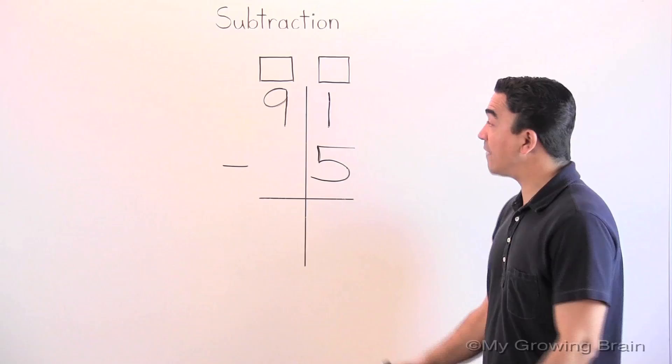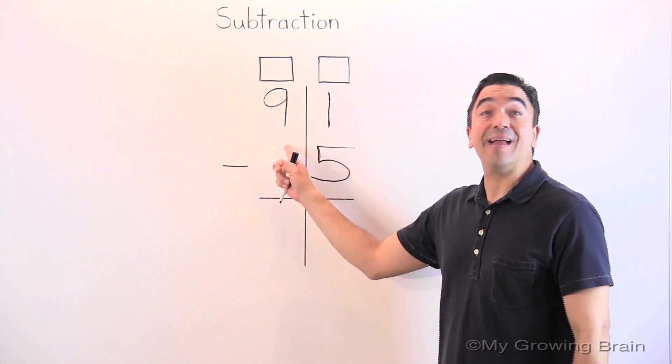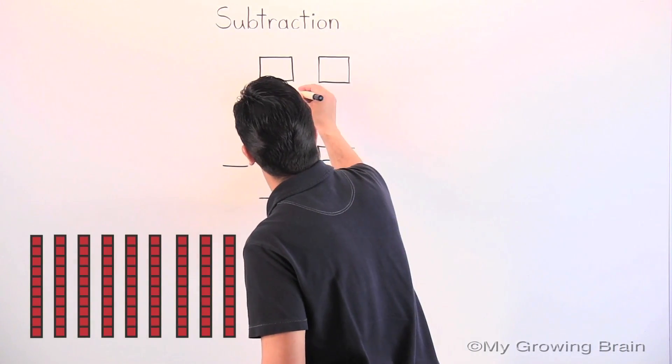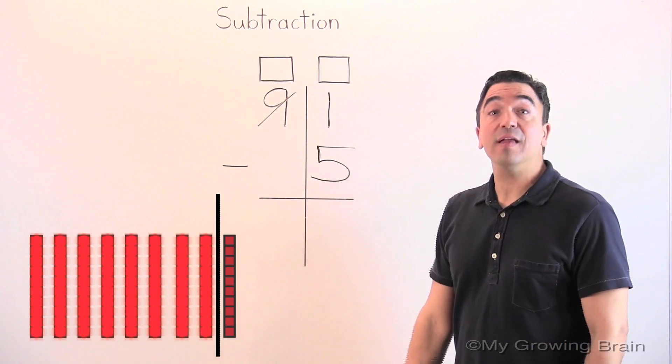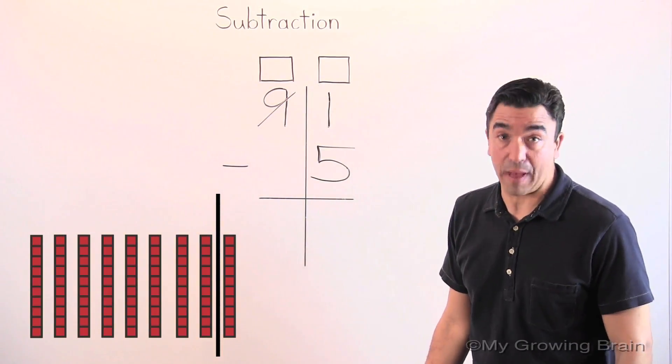So, we're going to have to move into the tens place and borrow one of these nine tens. So now, there are eight tens left, and I'm going to put my eight in the regrouping box.